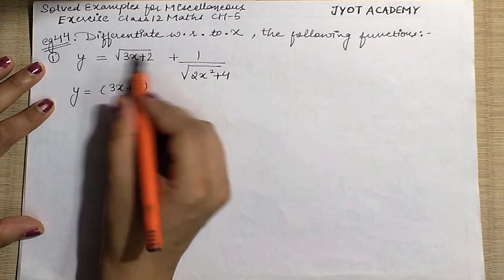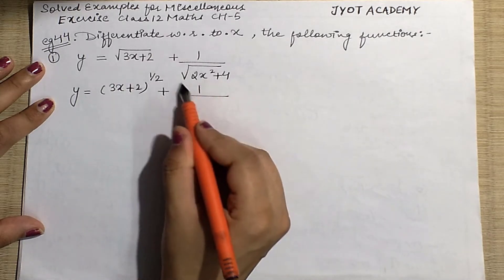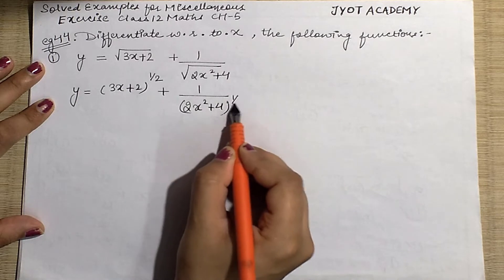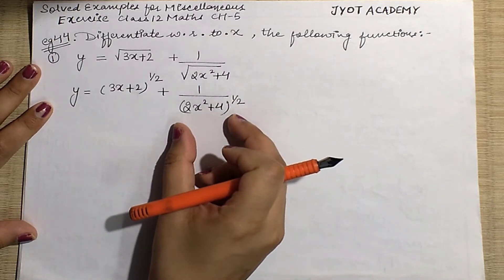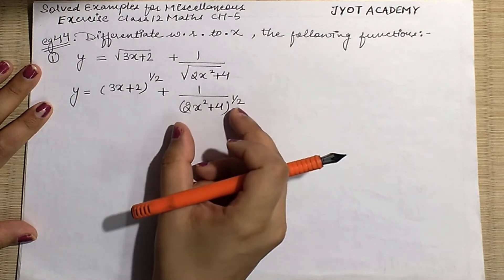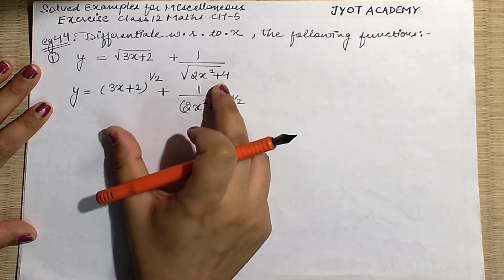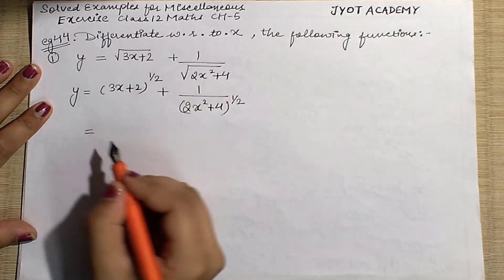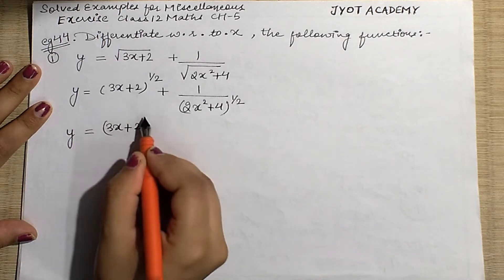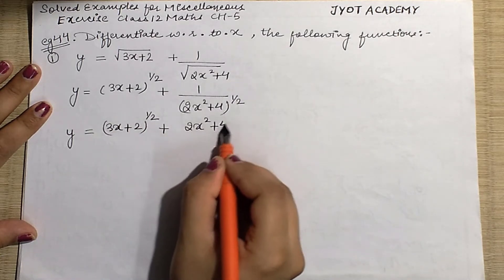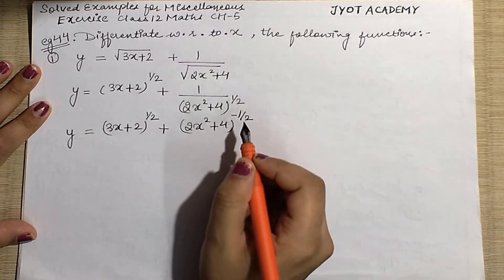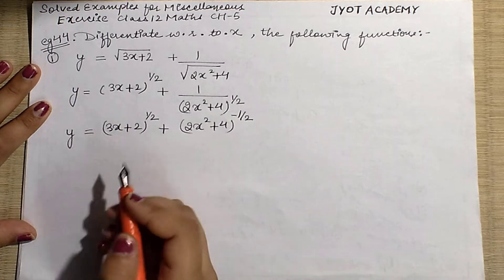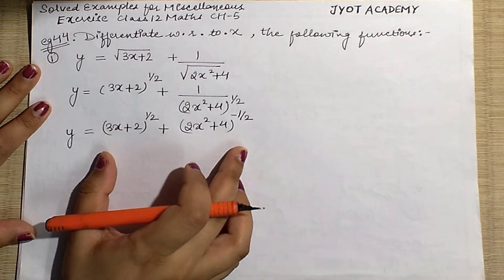The power of (3x+2) will be 1/2. In the base, we have the root of (2x²+4), so the root can also be written as power 1/2. If I want to bring that term to the numerator, the power becomes negative, so it becomes minus 1/2. So we write (3x+2)^(1/2) as it is, and (2x²+4)^(−1/2) because it has come to the numerator. If we write it back in the denominator, the power becomes positive 1/2.